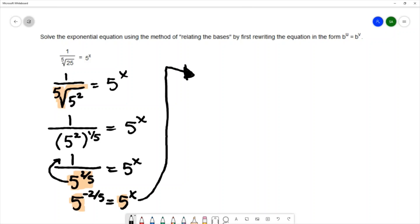So I'm able to say that the exponent on the left is equal to the exponent on the right. And since this solves the equation, I'm able to stop here. I have the value of x to be negative 2/5ths. So the solution to the equation 1 over the 5th root of 25 equals 5 to the x is x equals negative 2/5ths.